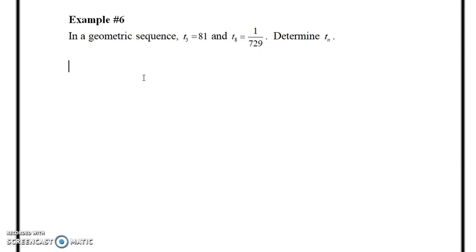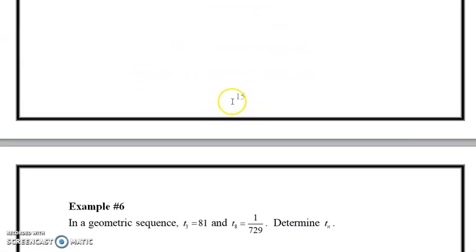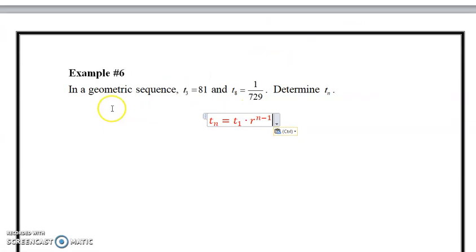So a couple ways you can approach this question. I think what I'll do is set up a system because we have two different general terms: the third term and the eighth term, and we're looking for the general term Tₙ. So basically looking for a formula. In order to get that, we need the first term and we need the ratio. And we have neither of those. However, if we use the formula for a geometric sequence, which we know we have, then we can fill it in.